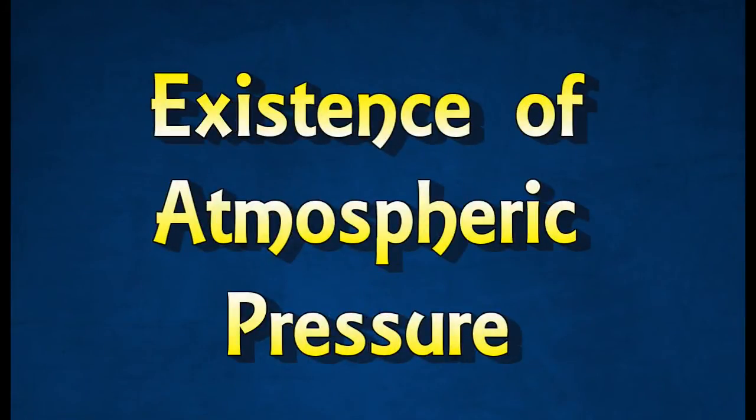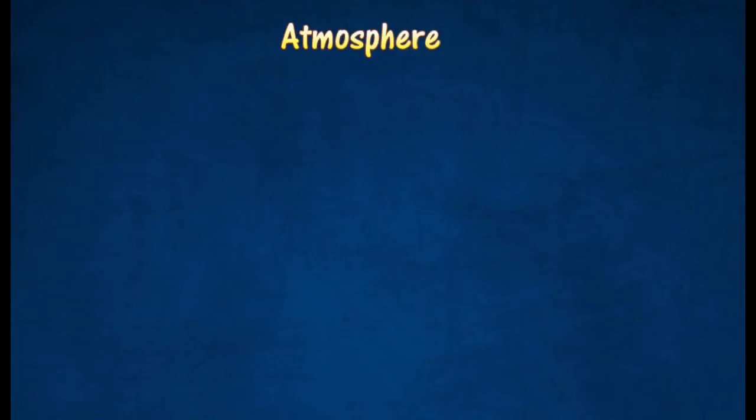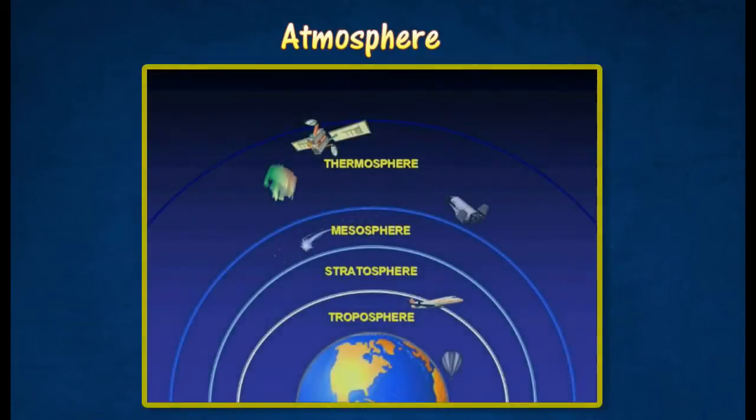Existence of atmospheric pressure. The atmosphere is the layer of mixture of gases such as nitrogen, oxygen, and carbon dioxide that surrounds the Earth.